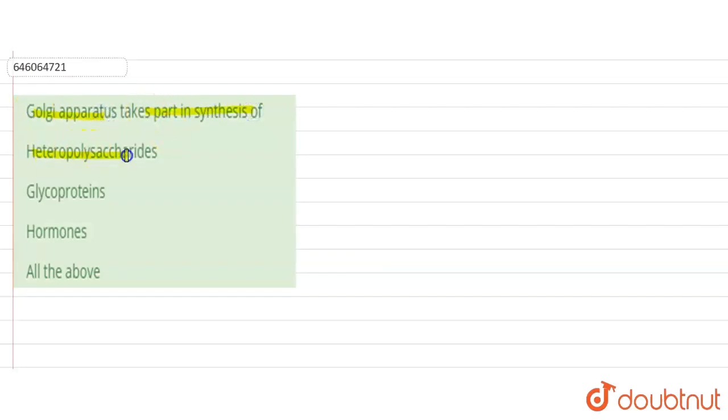The options are: heteropolysaccharide, glycoprotein, hormones, or all of the above. We're talking about Golgi apparatus.